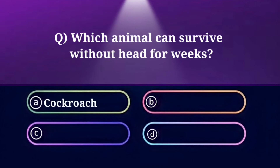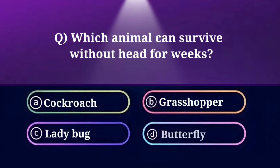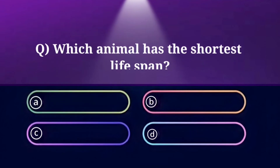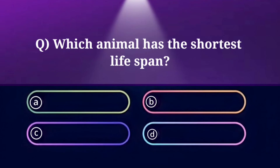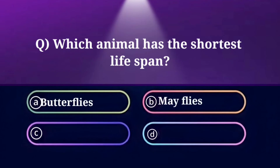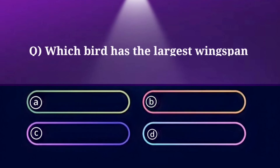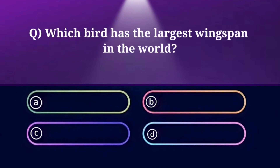Which animal can survive without its head for weeks? Option A: Cockroach, B: Grasshopper, C: Ladybug, D: Butterfly. And the answer is Cockroach. Which animal has the shortest lifespan? Option A: Butterflies, B: Mayflies, C: Fairy Flies, D: House Flies. And the answer is Mayflies.